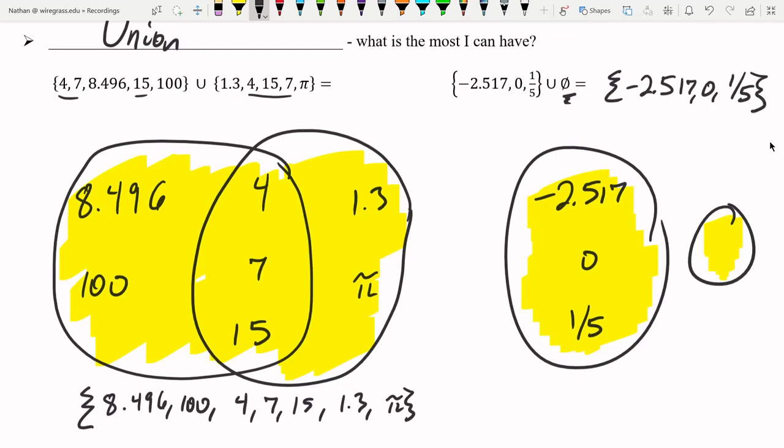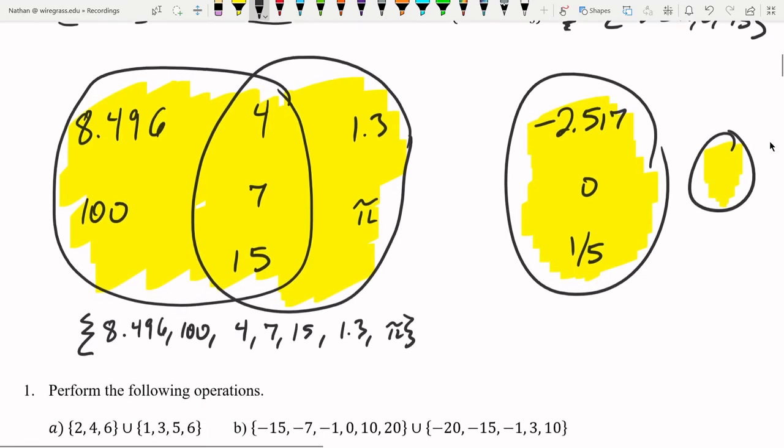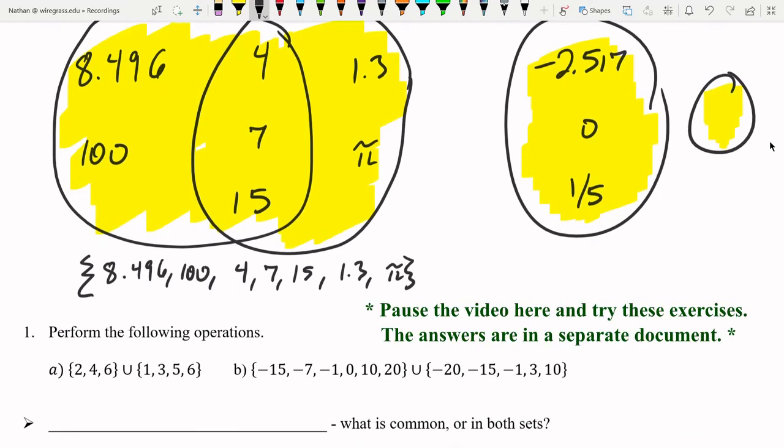It's kind of similar to something like 3 plus 0 is 3. The empty set didn't add anything to the union. So you just get the first set there. Give this a try in number 1.